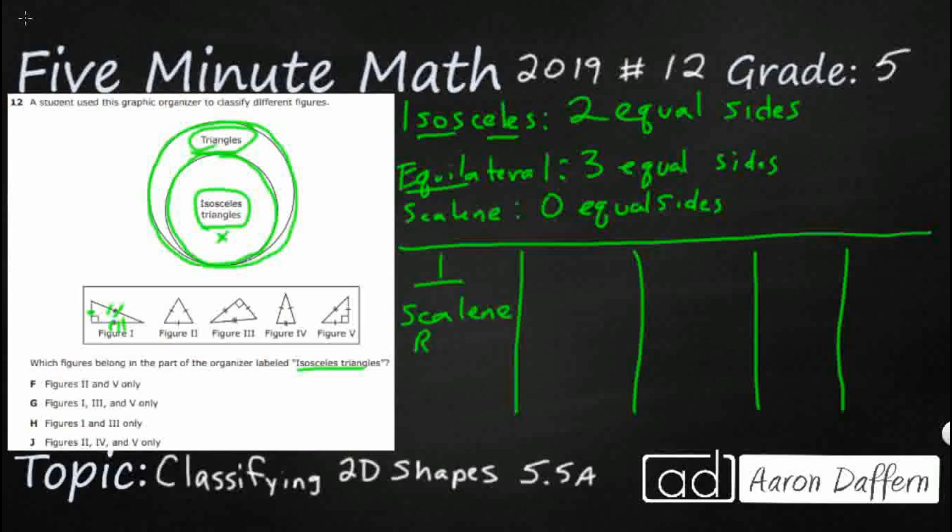So figure one is actually going to be a scalene triangle. If we want it to be technical, it's a scalene right triangle because you notice we've got a right angle right there. So it does not fit in our isosceles. We're looking for isosceles.